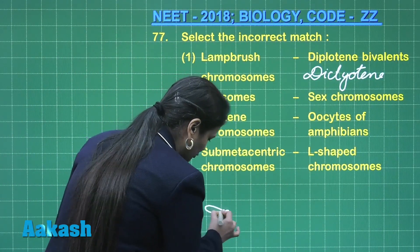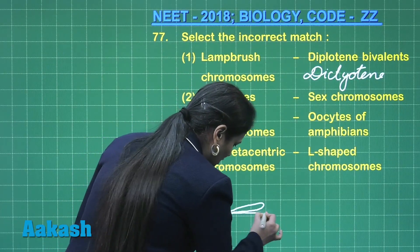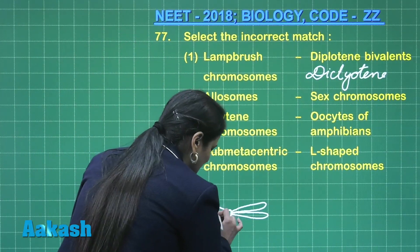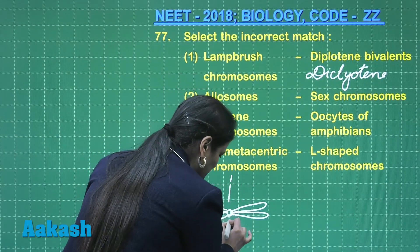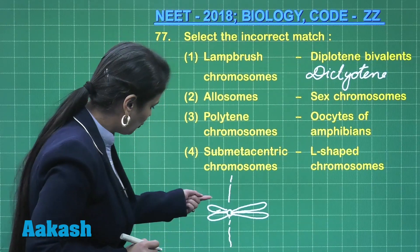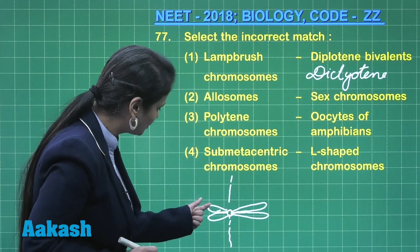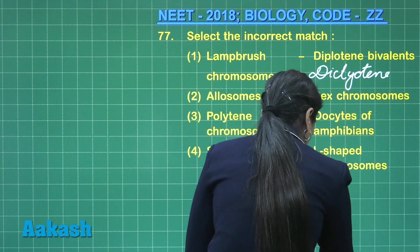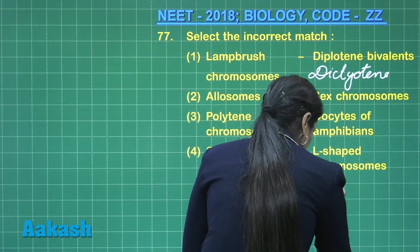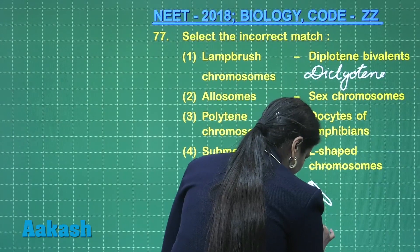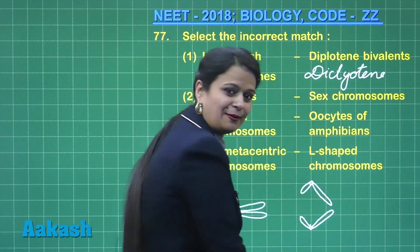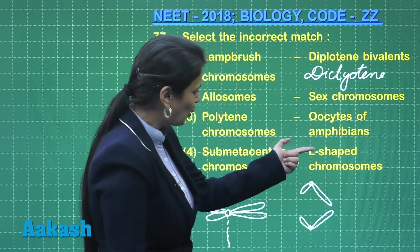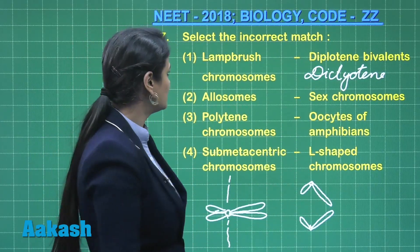Submetacentric chromosomes are L-shaped chromosomes. In a submetacentric chromosome, the position of the centromere is not median but submedian. During anaphase, the centromere splits with the help of spindle fibers — one chromatid moves towards one pole and another chromatid moves towards the other pole, forming daughter chromosomes. Because of the submedian position, one arm is small and the other is comparatively larger, giving an L-shape appearance.